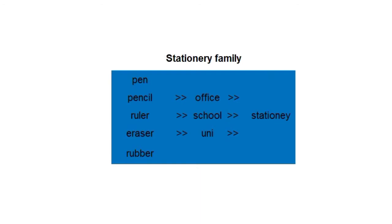Another illustration to show how wide this principle goes is the stationery family. The gene of the stationery family is that it is things that we use in an office, in a school, in a university, or even at home, to write, to draw, and to communicate on paper.